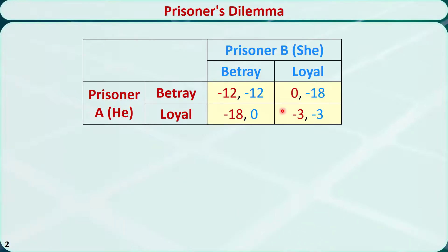Here is an example of the Prisoner's Dilemma. Two robbery suspects are arrested and imprisoned. They are interrogated simultaneously in separate rooms, so they cannot communicate with each other. The prosecutors lack sufficient evidence to convict them on the principal charge, but they do have evidence against the suspects on a minor charge. The prosecutors offer each prisoner a bargain. This is the payoff matrix. Each prisoner is given the opportunity either to betray the partner by testifying that the other committed the crime, or to be loyal to the partner by remaining silent.